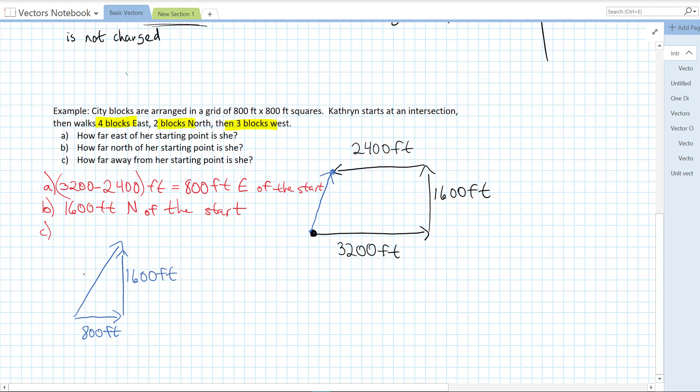And we know that her overall distance north is 1,600 feet. I'm going to label this resultant displacement from her starting point, S. So if we want to solve for S, that's a right triangle.